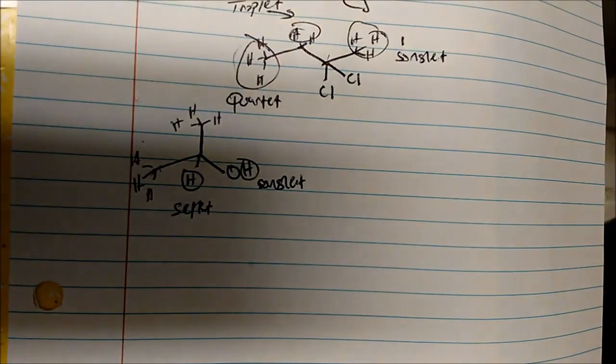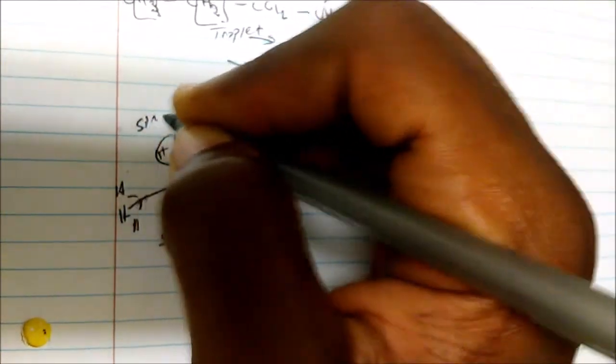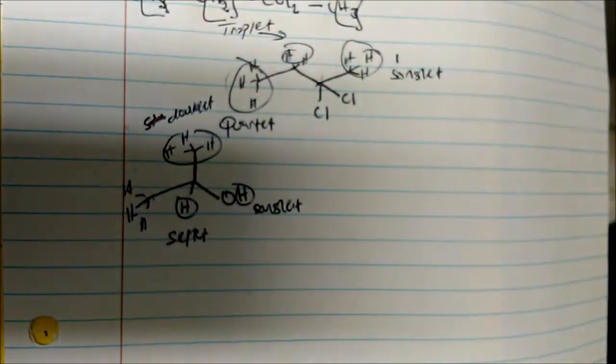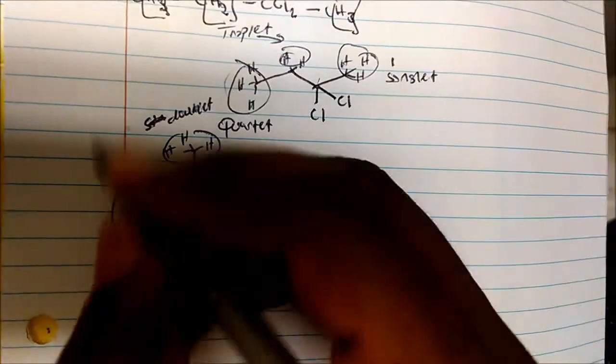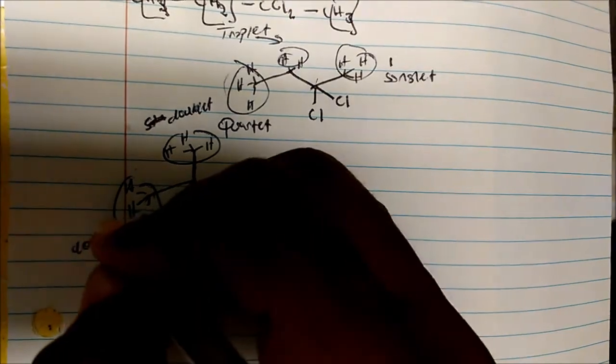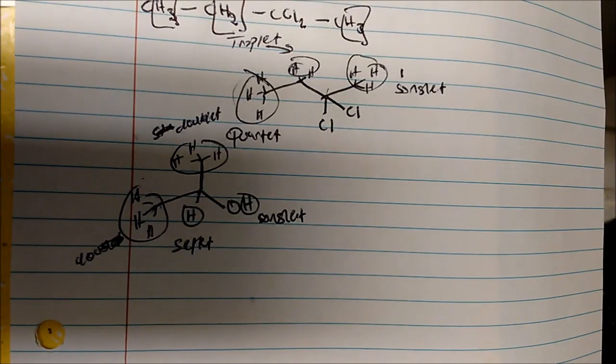A septet should pop up for that central proton. Now for these CH3 groups, I only have one neighboring hydrogen. So the N+1 rule says one plus one is two — that's a doublet. And similarly, this other CH3 group will also be a doublet.